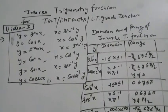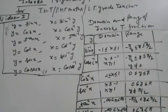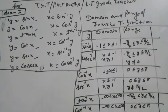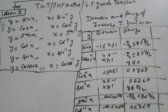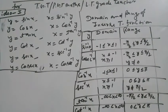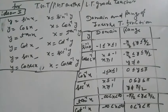Inverse trigonometry functions for TG mathematics, teacher Matthew Liberty. If y equals sin x, then x equals sin inverse y. If y equals cos x, then x equals cos inverse y. If y equals tan x, then x equals tan inverse y. If y equals cot x, then x equals cot inverse y. If y equals sec x, then x equals sec inverse y.